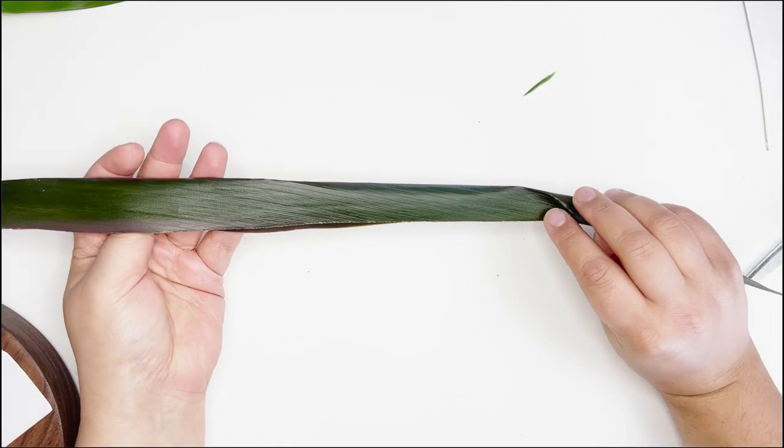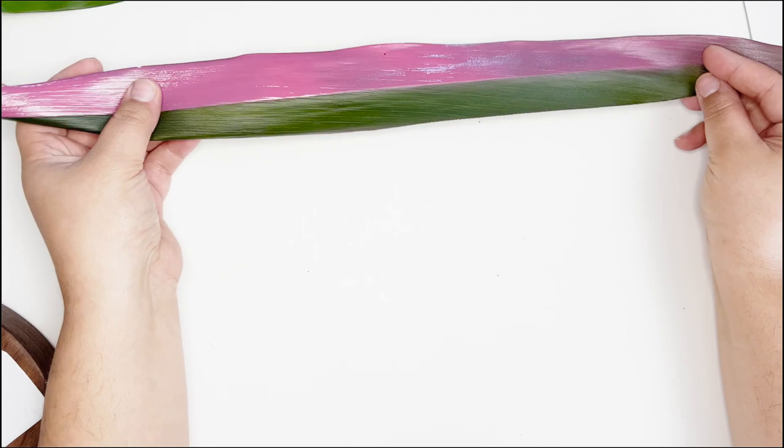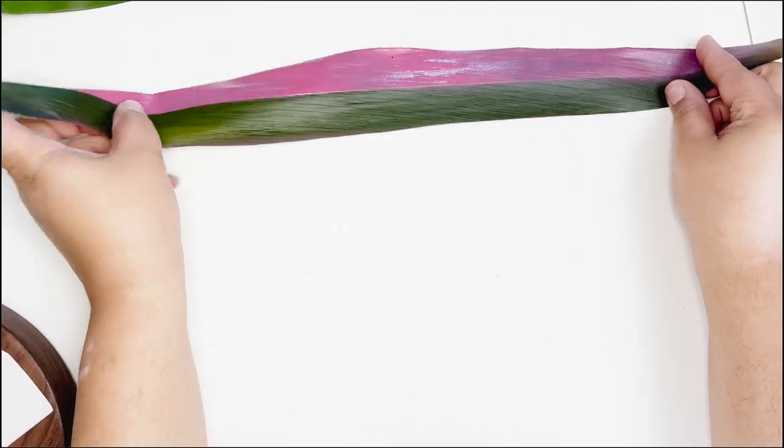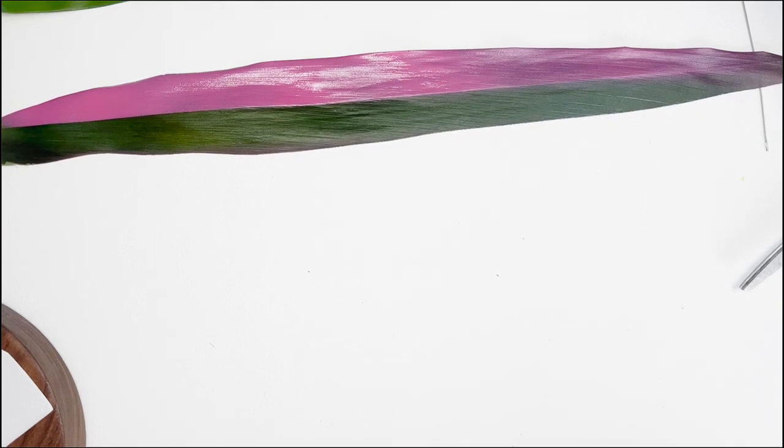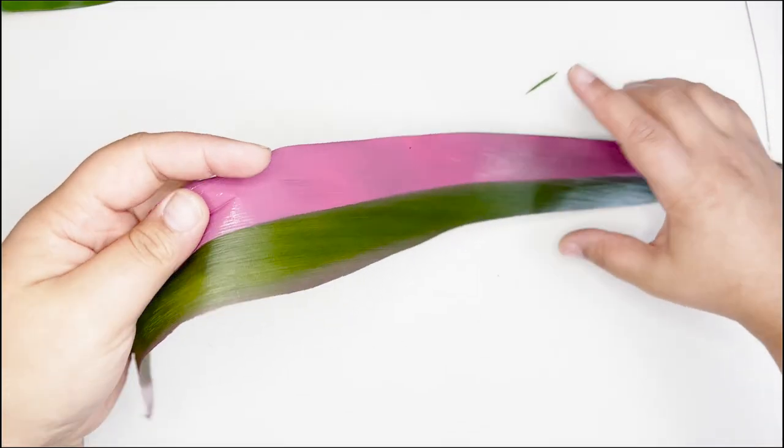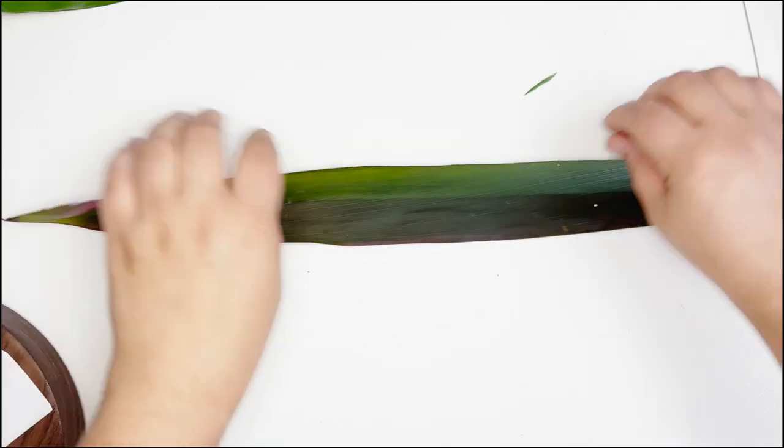For the purpose of this video, I spray painted half of my leaf pink to visualize how we fold the tea leaf to make the rose. It's not as noticeable when they're soft, but when tea leaves are fresh, the front of the leaf is shiny and the back is dull.